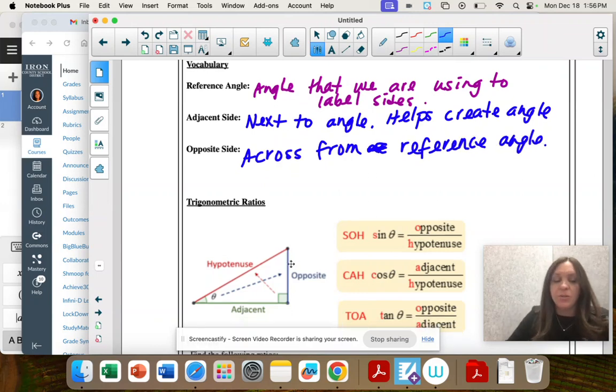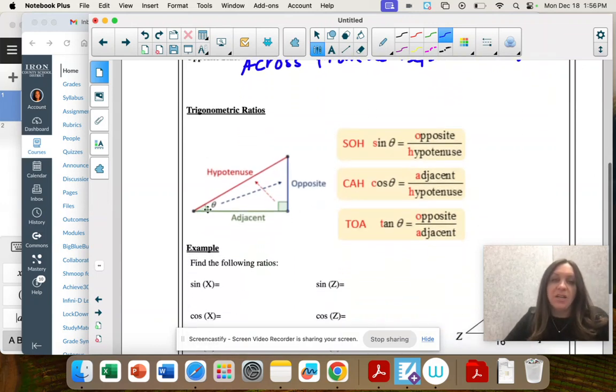And here's a picture with an example. So here theta is our reference angle, and when we have sine, cosine, tangent, theta is right after that. That's the angle. And then we would label the sides across from that's the opposite. The one next to it is adjacent.